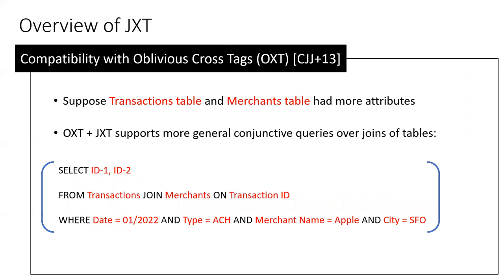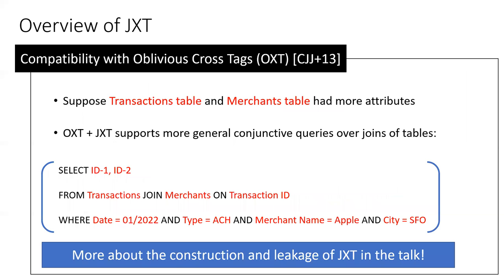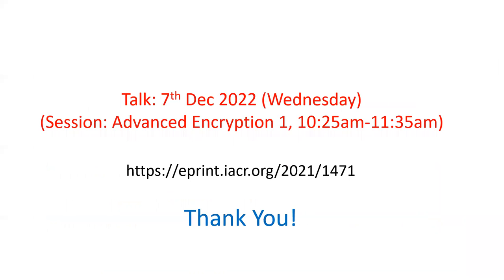Finally, JXT is fully compatible with state-of-the-art SSE schemes for boolean queries such as oblivious cross-tags, and can be used in conjunction with such schemes to support rich boolean queries over joins of encrypted tables in encrypted relational databases. For more details on the construction and leakage of JXT, do tune in to our talk at AsiaCrypt on Wednesday. Thank you and see you at AsiaCrypt 2022.